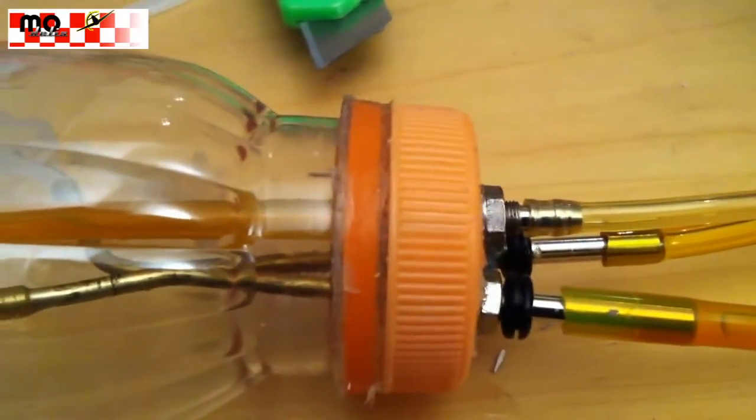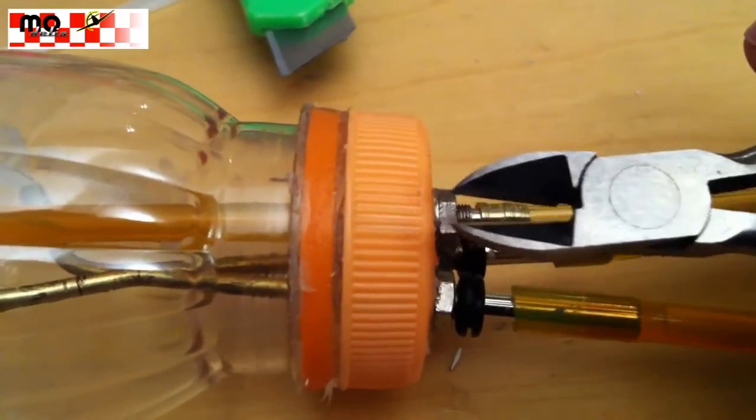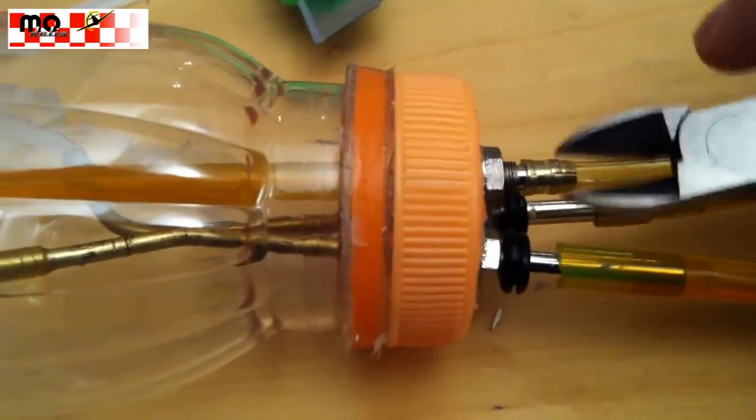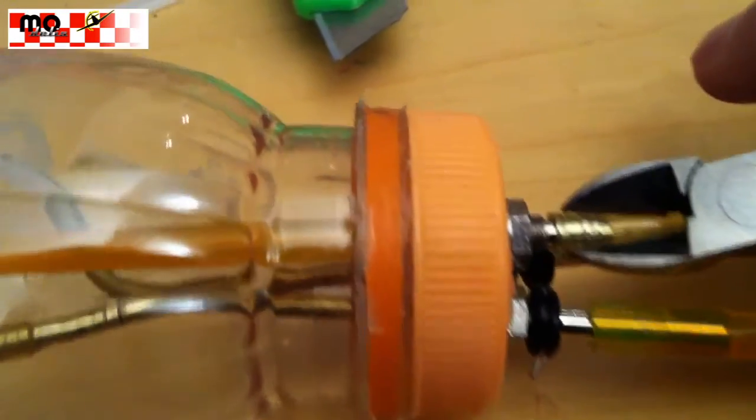To prevent this we use a cutter and we cut away the tubing sideways.